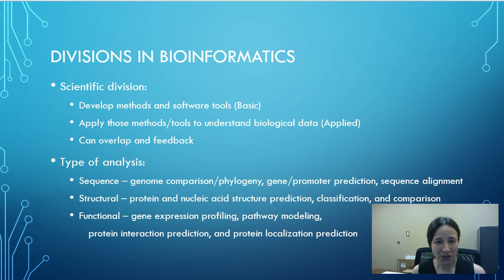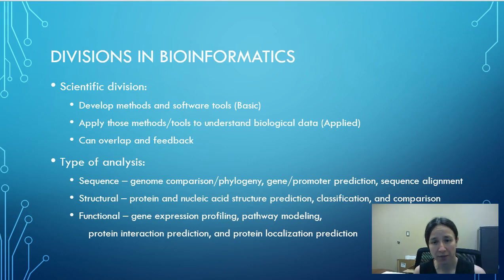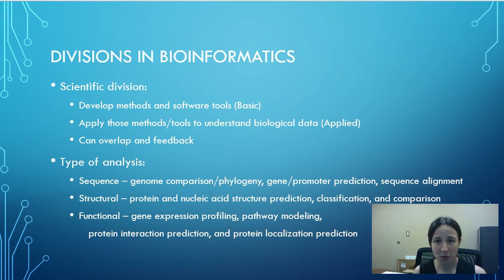We can also divide bioinformatics by the type of analysis we want to use. If I'm looking at sequences, for example, I could be comparing genomes between organisms to see how they're evolutionarily related — also known as phylogeny. I could also look at the actual sequences and predict parts, such as what is a gene, what's going to encode a protein, or what are the regulatory regions such as promoter regions.